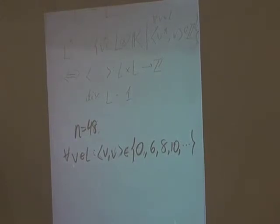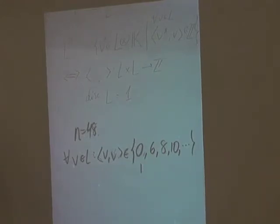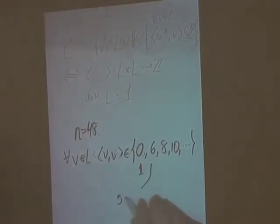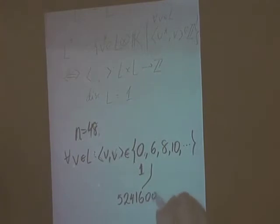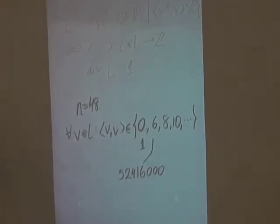Remarkably, once you know this much, you know a whole bunch of other things about the lattice. For instance, evidently 0 occurs with multiplicity 1. The norm 6 is going to occur always with the same multiplicity — which might not be as obvious — of exactly 52,416,000. And norm 8 will occur with some other multiplicity. That's the number of vectors of norm 8: 39 billion and change. These numbers are constant for all lattices of this kind.